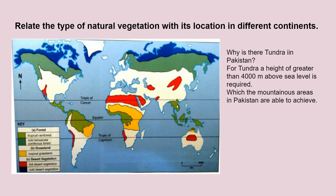This basically shows a world view of how natural vegetation is spread throughout the world. In the arctic region we can see tundra forest. In the sub-arctic region we have coniferous. Then in the north and south of the equator, in between the Tropic of Capricorn and Cancer, we can see tropical grasslands and tropical forest.